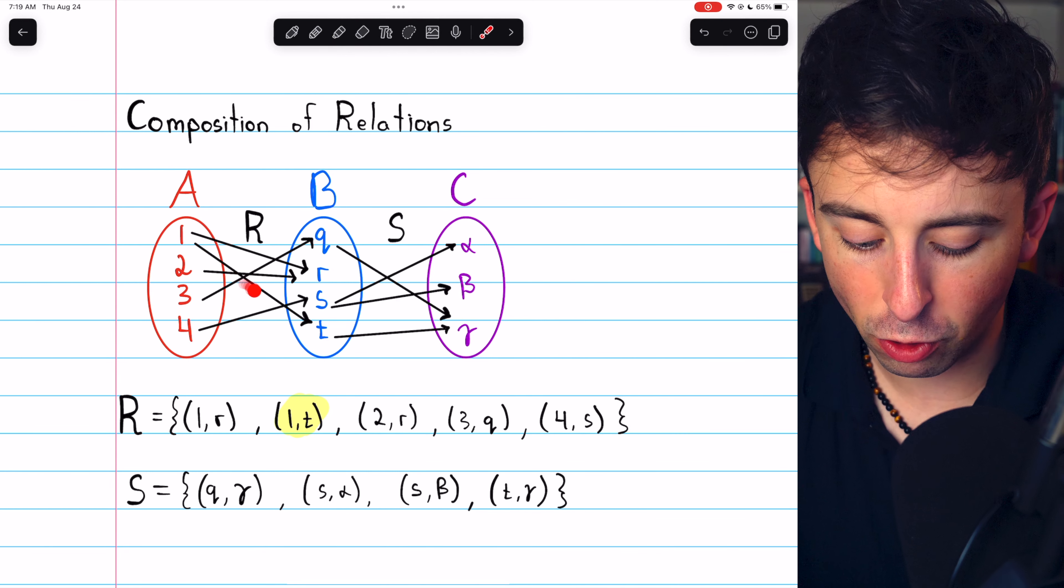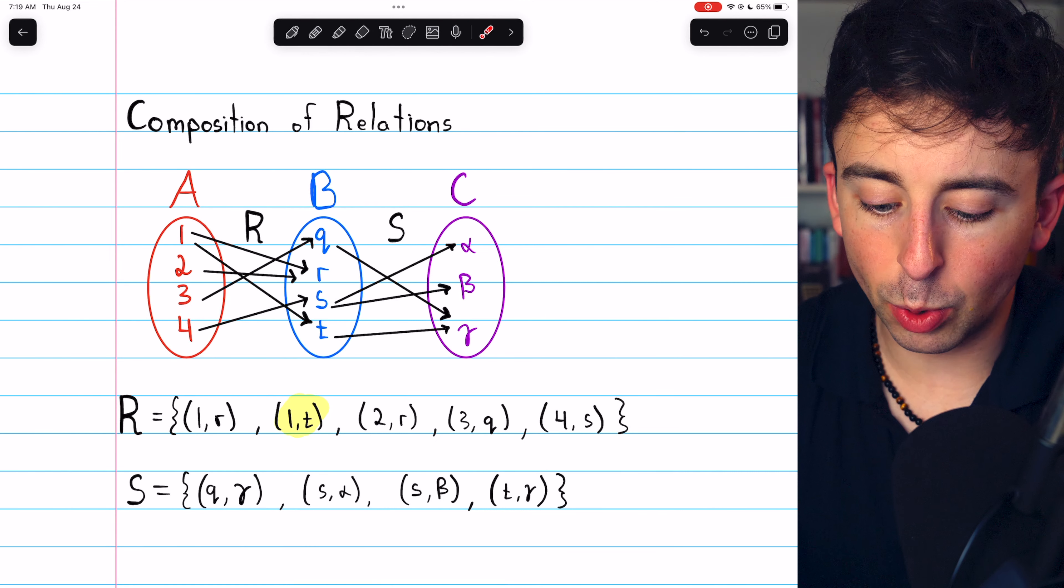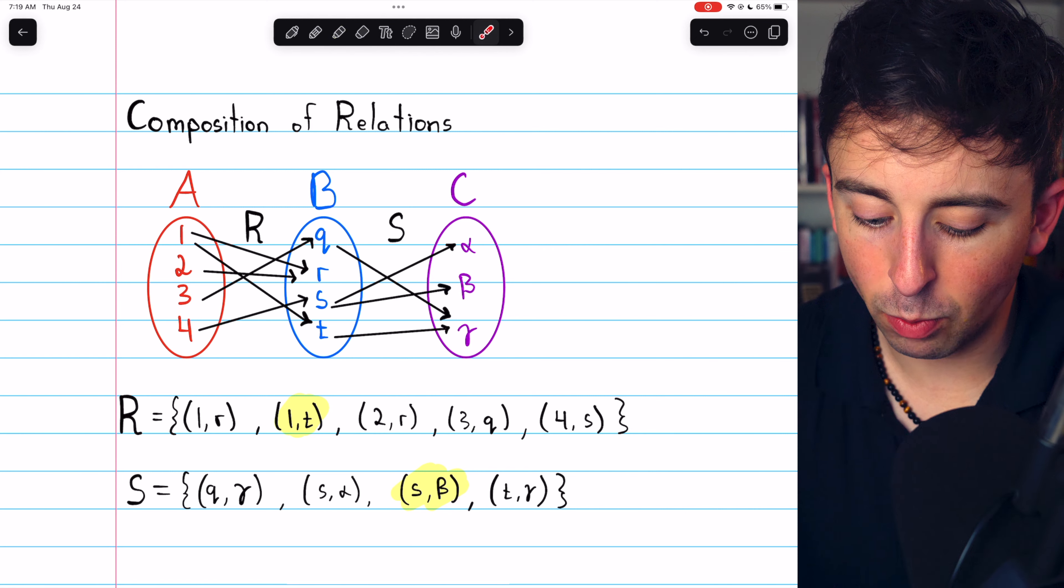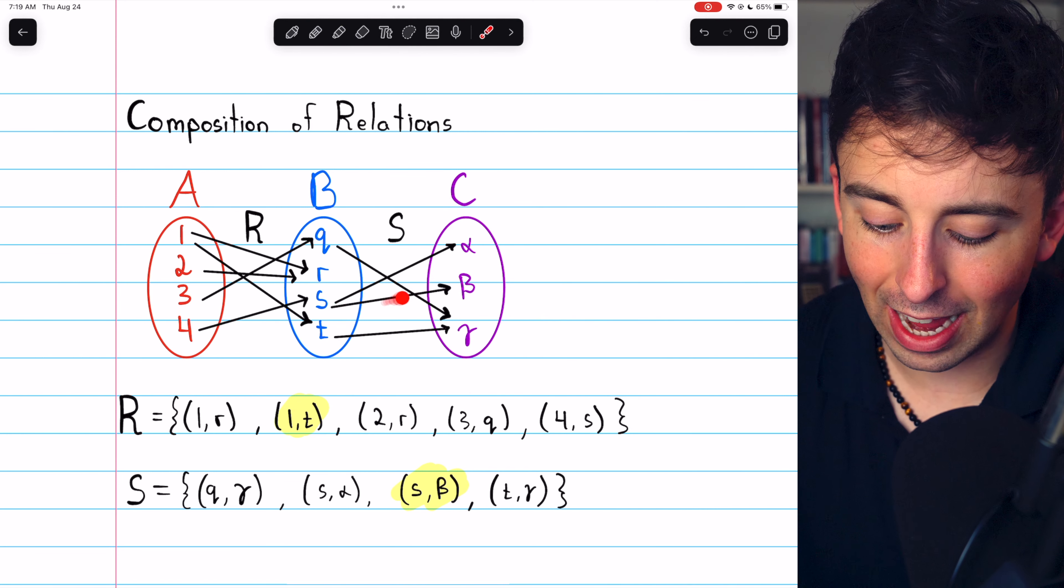Given this arrow, that shouldn't be surprising. In the relation S, for example, we see that S relates to beta, which is indicated by this arrow here.